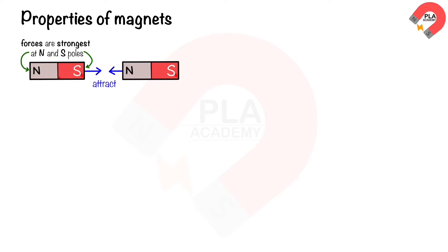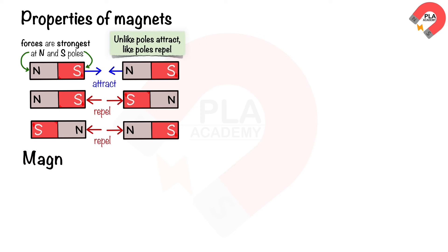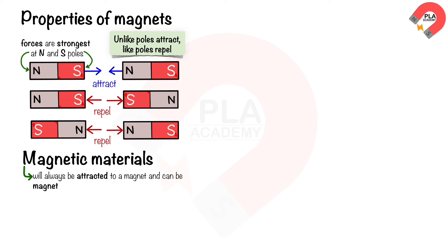When two magnets are held close together, there will be a force between the magnets. Unlike poles attract; like poles repel. Magnetic materials will always be attracted to a magnet and can be magnetized.